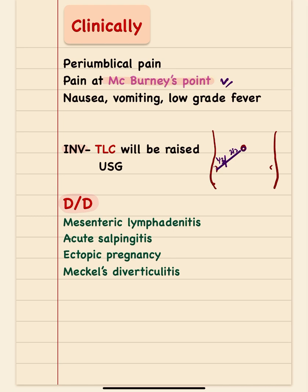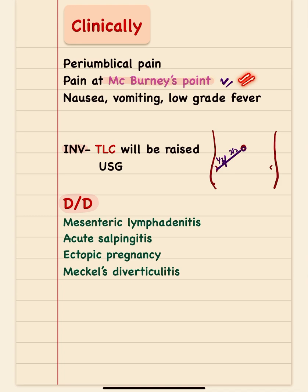Pain in this region can lead to a differential diagnosis of mesenteric lymphadenitis, or acute salpingitis — inflammation of the fallopian tube — in females. Ectopic pregnancy can also mimic symptoms of acute appendicitis. Inflammation in a Meckel's diverticulum can also simulate acute appendicitis clinically. The most important clinical finding to remember is pain at McBurney's point associated with nausea and vomiting.